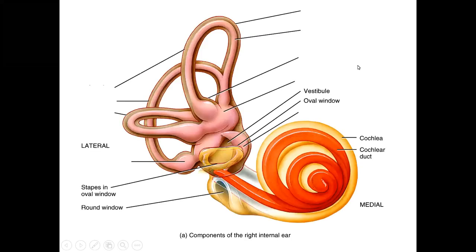Let's take a look at the vestibular organs. The vestibular organs give us our sense of movement in space based off of the change in gravitational acceleration or g-force. When we look at the vestibular organs, we're looking at structures that come away from the cochlea, stemming off of the vestibular area of the inner ear.